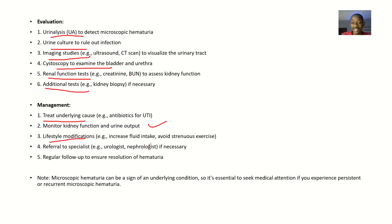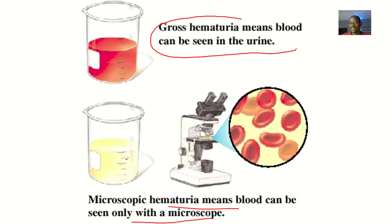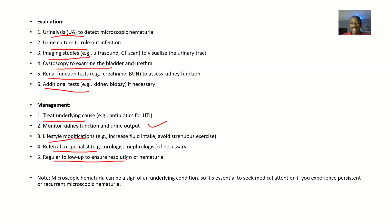Lifestyle modifications include increasing fluid intake and avoiding strenuous exercise. You can refer the patient to a specialist such as a urologist or nephrologist if necessary for specialized care. Since this type of hematuria is microscopic, you want to prevent it from progressing, so do regular follow-ups for this type of patient.